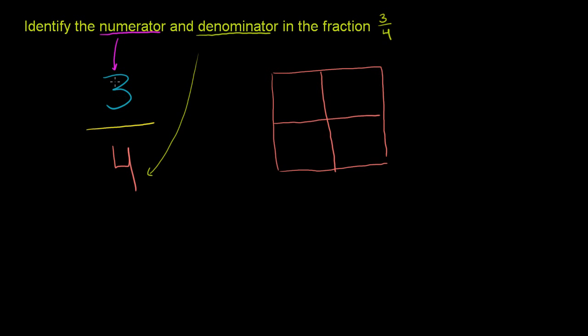The 3 tells us we are representing 3 of those 4 pieces. Out of 4 possible ones, we are using 3, or maybe we're eating 3. So you can imagine someone says I ate 3 fourths of a pie.